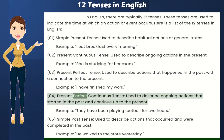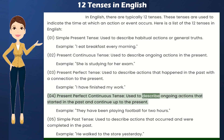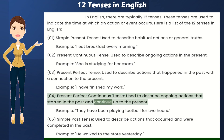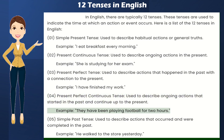Present Perfect Continuous Tense — used to describe ongoing actions that started in the past and continue up to the present. Example: They have been playing football for two hours.